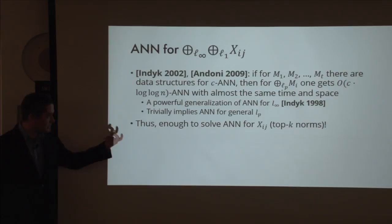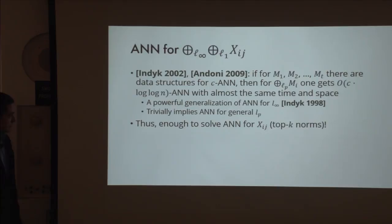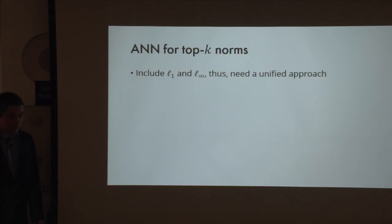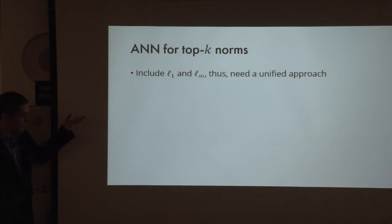Interesting thing about top-K norms: they include both L_1 and L-infinity distances. It unifies both, and for L_1 and L-infinity we have two very different techniques: for L-infinity, a decision tree approach; for L_1, a hashing approach. So now we need something that would do both. The idea: even though embedding into L-infinity directly fails, let's try it again with randomized embeddings.